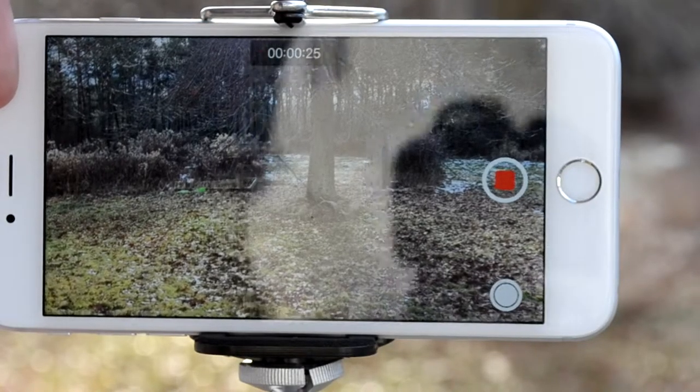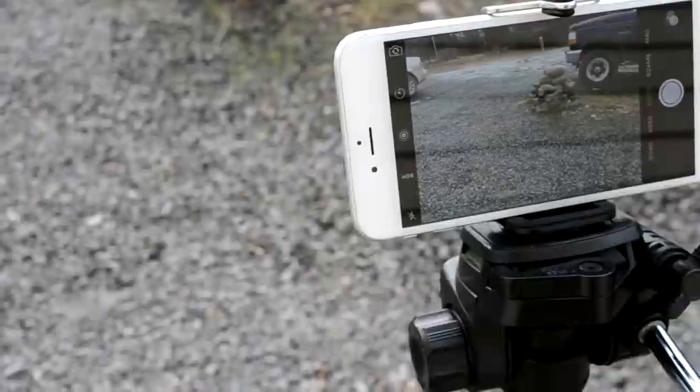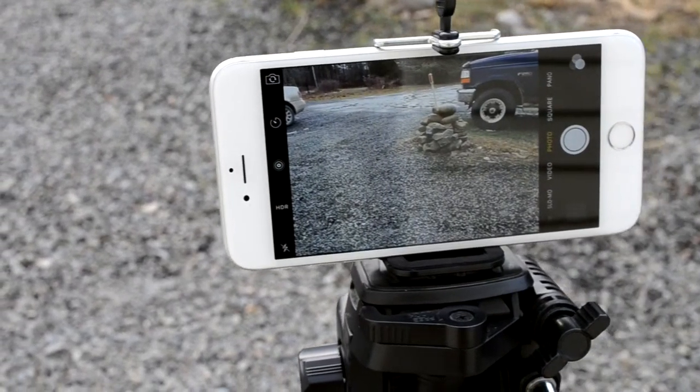The tripod stand features a 360 degree rotational head allowing for a full viewing angle with a universal quarter inch screw head allowing for you to mount it to other bigger tripods so long as you have the adapter such as a DSLR adapter.